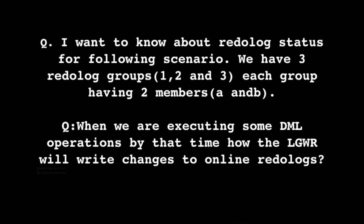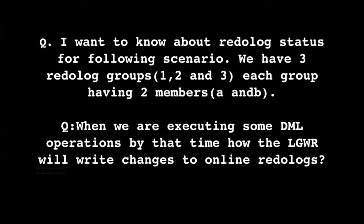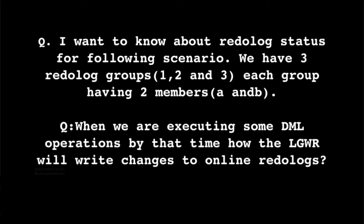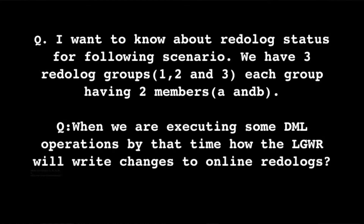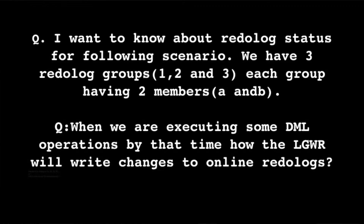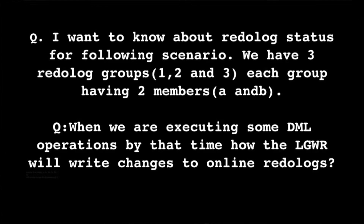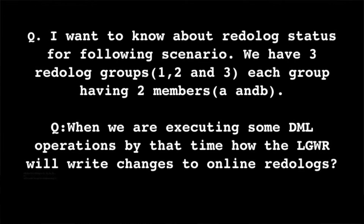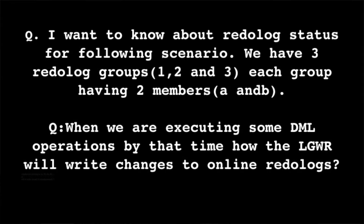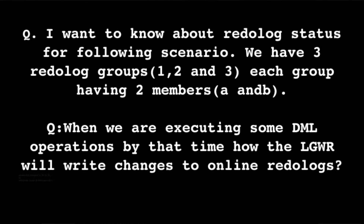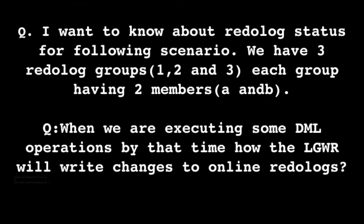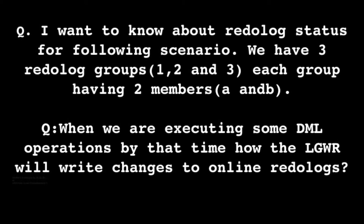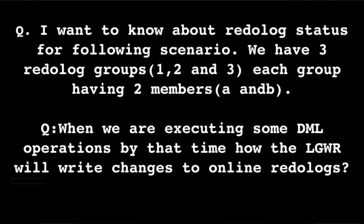The first question: I want to know about redo log status for the following scenario. We have three redo log groups — 1, 2, and 3 — each group having two members, A and B. When executing DML operations, how will the log writer write changes to online redo logs? Will it write to 1A, 1B, 2A, 2B sequentially, or will it write to 1A and 1B simultaneously?